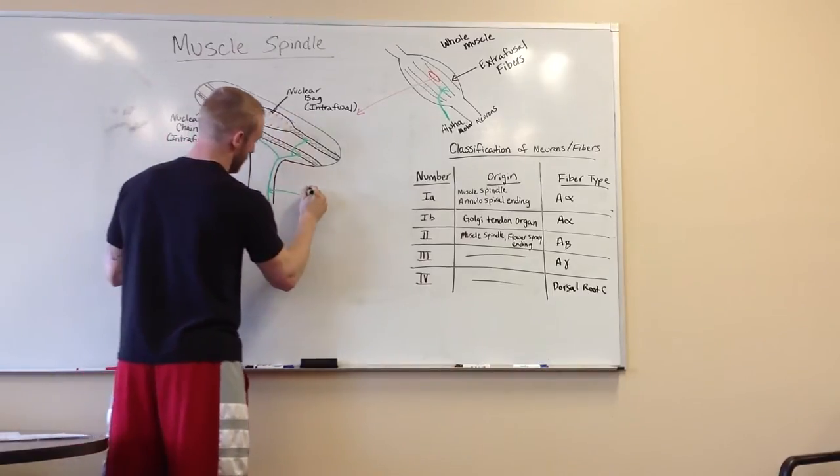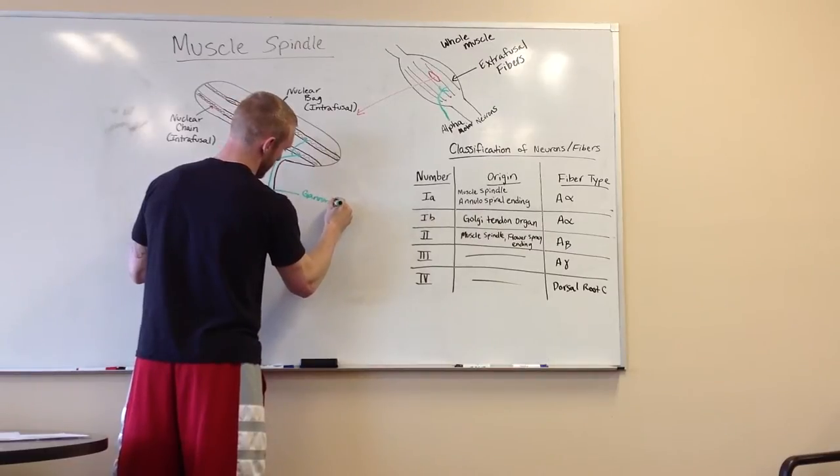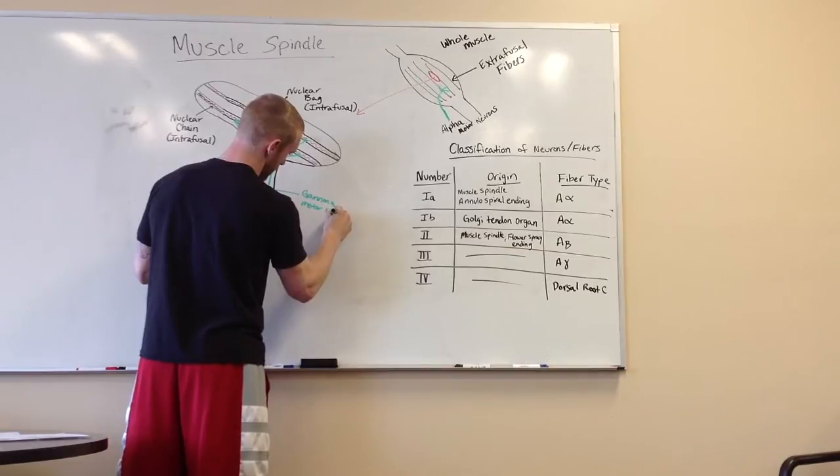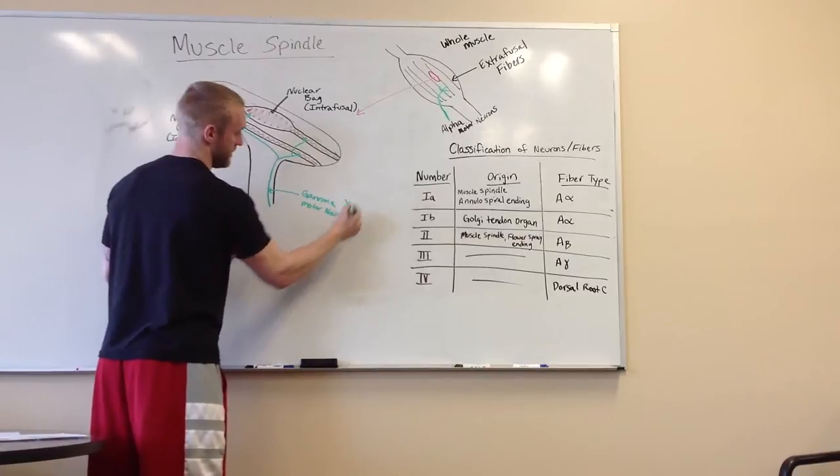So these are our gamma motor neurons, and this is that.